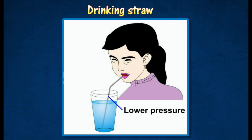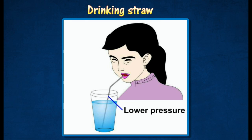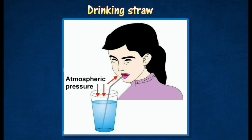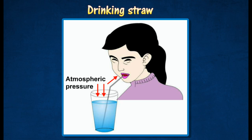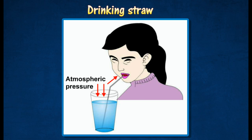When air is sucked out from a drinking straw, the air pressure inside becomes lower. The higher atmospheric pressure acting on the surface of the drink pushes the drink into the drinking straw and enables it to be sucked into the mouth.